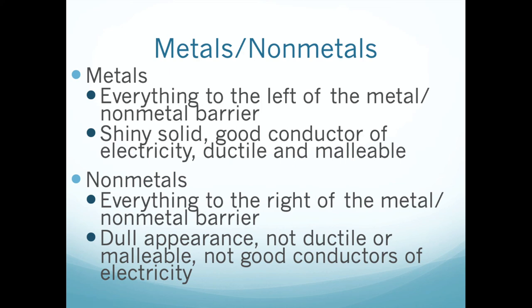Non-metals, on the other hand, tend to be dull, are poor conductors of electricity — what are called insulators — and tend to have lower melting and boiling points. Many of them are liquids or gases at room temperature. There are exceptions — diamond is made from carbon and has a very high melting point — but the majority of non-metals have very non-metallic properties.